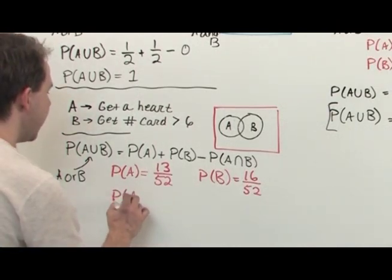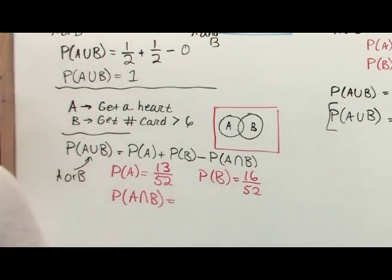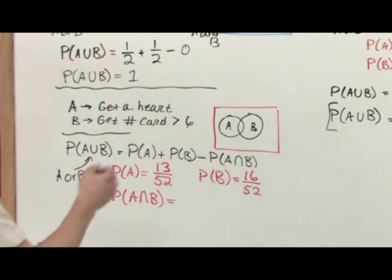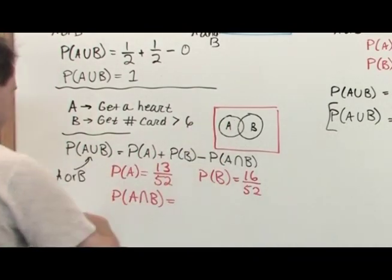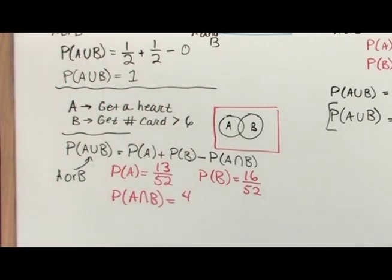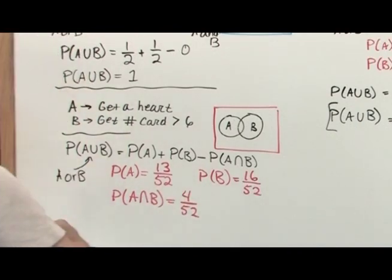What is the probability of A intersection B, which is A and B? So A and B would be you get a heart and it's a card greater than 6. So you have 7, 8, 9, and 10 of hearts. So you have 4 cards—7, 8, 9, 10 of hearts—there's only 4 cards like that out of 52.